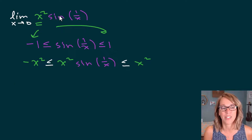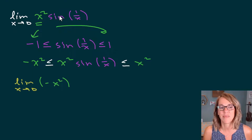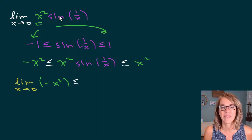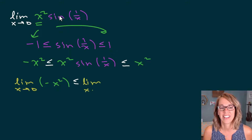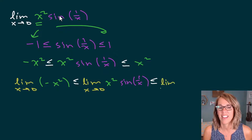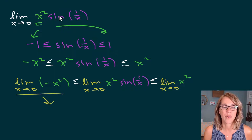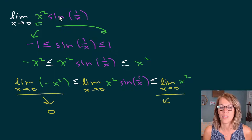Once you've got this set up, you're ready to run that limit all the way through. I'm looking for the limit as x approaches zero, and I'm going to apply this to all of my functions all the way through the inequality. So the first limit, then the middle limit — the limit as x approaches zero of x squared sine of one over x — and then the limit on the other side, the limit as x approaches zero of x squared. Both limits on the outside go to zero, so this limit also goes to zero.